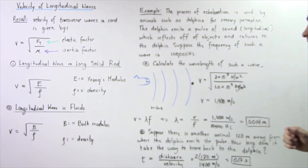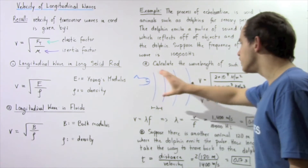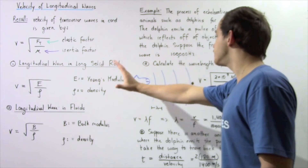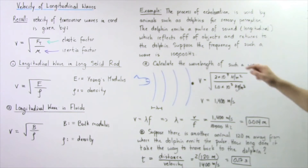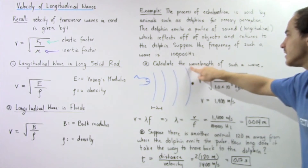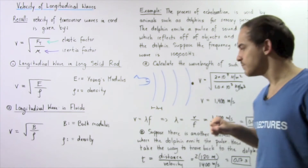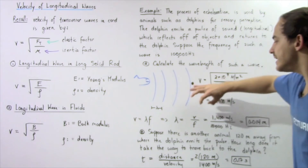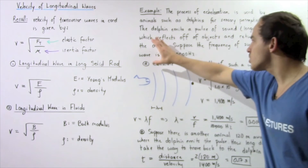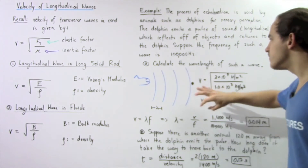In part a, we want to calculate the wavelength of such a wave. Suppose the dolphin emits a pulse that travels to some object and then returns back. The frequency of our longitudinal wave is given, and we're asked to calculate the wavelength. Recall that wavelength multiplied by frequency equals velocity, so wavelength equals velocity divided by frequency. Notice we're only given the frequency, so we must first calculate the velocity.